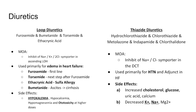So: thiazide diuretics are sodium chloride symporter inhibitors in the distal convoluted tubule, primarily used for hypertension. They can increase cholesterol and glucose levels and also cause electrolyte abnormalities. These two drug classes — loops and thiazides — are two of the most popular and you're guaranteed to see all of these drugs in clinical practice.